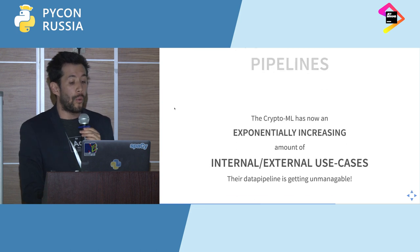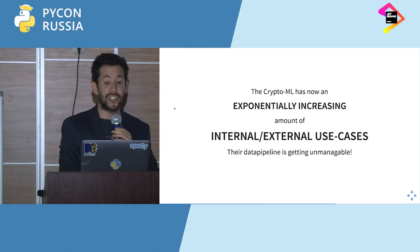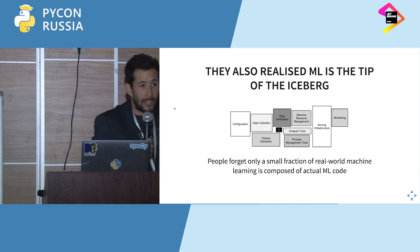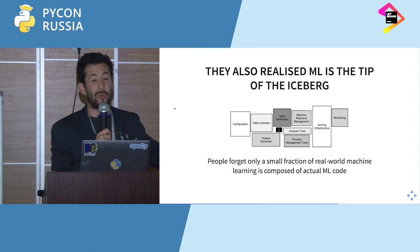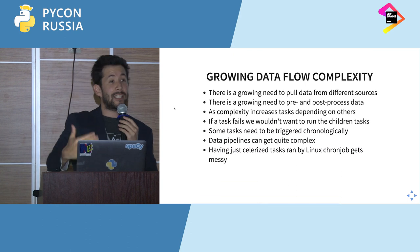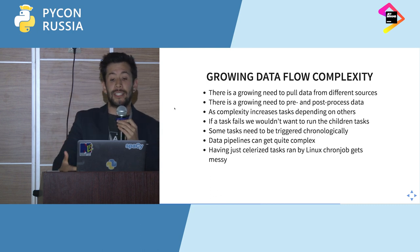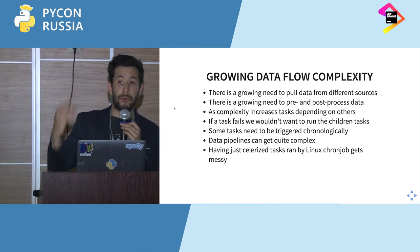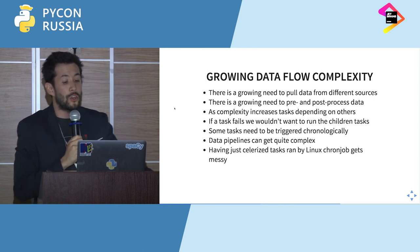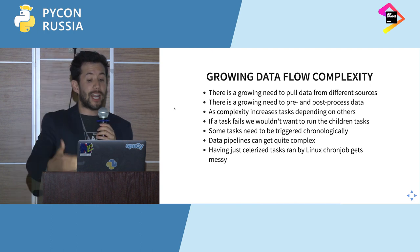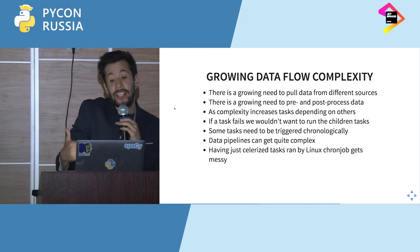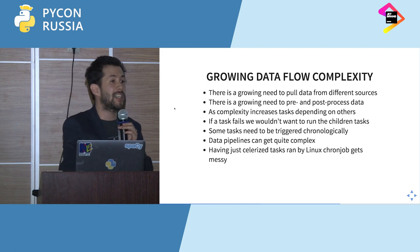We now jump into smart data pipelines. The CryptoML team has an exponentially increasing number of internal use cases and the data pipeline is getting unmanageable. They also realize that machine learning is only the tip of the iceberg — everything else is what you actually need to support it, and only a small fraction of real code is actual machine learning. As data flow complexity grows, there's a bigger need to pull data from different sources, a growing need to pre and post-process data, increasing complexity of tasks depending on others finishing, and tasks needing to be triggered on a schedule.